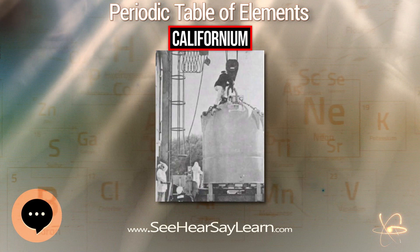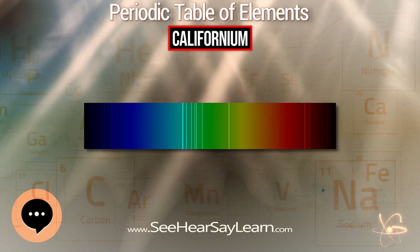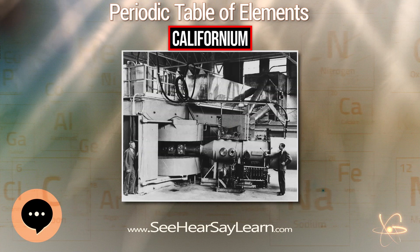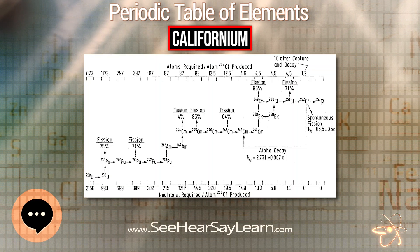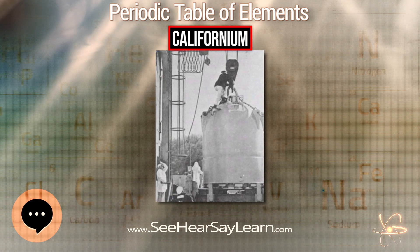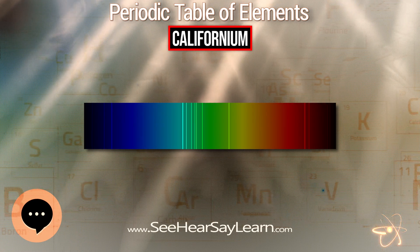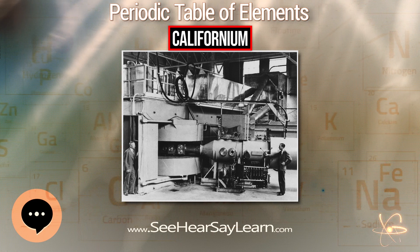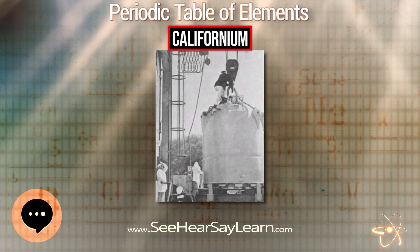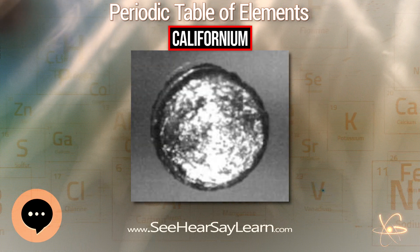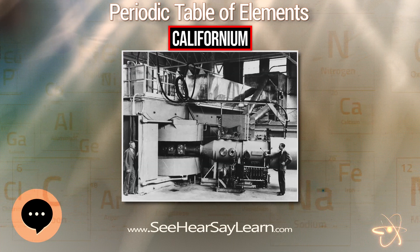Californium has been used in educational applications since 1969, when the Georgia Institute of Technology received a loan of 119 g of californium-252. It is used with online elemental coal analyzers and bulk material analyzers in the coal and cement industries. Neutron penetration makes californium useful in detection instruments such as fuel rod scanners, neutron radiography of aircraft and weapons components to detect corrosion and cracks, and portable metal detectors. Neutron moisture gauges use californium-252 to find water and petroleum layers in oil wells and for gold and silver prospecting.